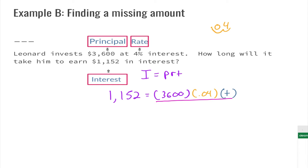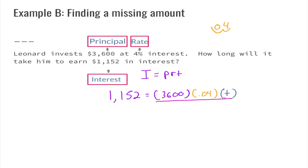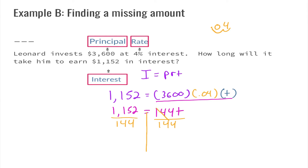Let's bring out our calculator to multiply the things we can on the right side. We multiply thirty-six hundred times 0.04, which gives us one hundred and forty-four. So we now have one hundred and forty-four T equals one thousand one hundred and fifty-two. We draw a wall on both sides, divide both sides by one forty-four — these cancel — and one thousand one hundred and fifty-two divided by one forty-four equals eight. So T equals eight.